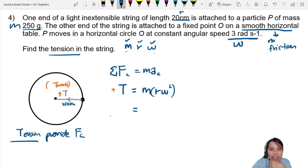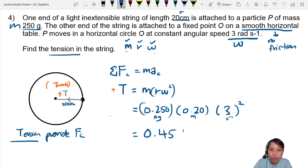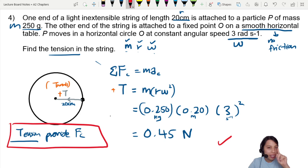Then we plug in everything here: 0.250, radius is 20 cm or 0.2 in meters. This is in kg. Last one, omega given to us, 3 radians per second. Already SI unit, so okay, square. This will give us 0.45 newton. That's how we can find tension. The tricky part is identifying who provides centripetal force. There's only got one force. In the future, you'll see more than one force, maybe.